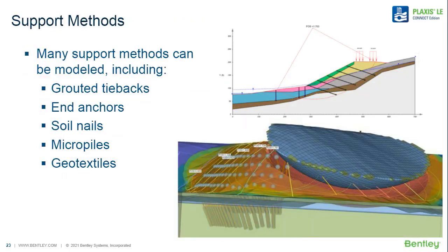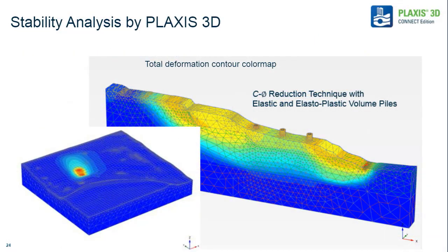Support methods in the software include grouted tiebacks, anchors, soil nails, micropiles, and geotextiles — all swept into three dimensions. This is a powerful feature because anchors in a 2D model effectively become a steel plate when extruded into the third dimension. Representing them in 3D allows a point load at a specific location, and anchor spacing in three dimensions can be adjusted in any direction to see how it affects stability and minimize anchors to achieve the desired factor of safety.